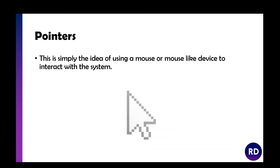Pointers are just your mouse or a mouse-like device — it could be something else as well. Many people like to change the arrow to something different. It's the way of allowing you to see where your mouse is positioned and allowing you to interact with the system.